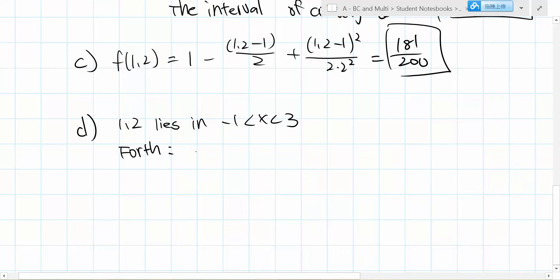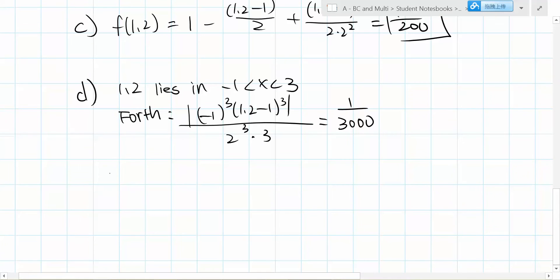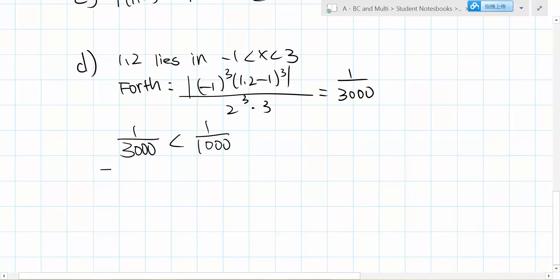Since we already have the first three terms, the fourth term is calculated here, which equals 1/3000. We can see that 1/3000 is less than 1/1000, which is 0.001. Therefore, the approximation in part c is within 0.001 of the exact value of f(1.2).